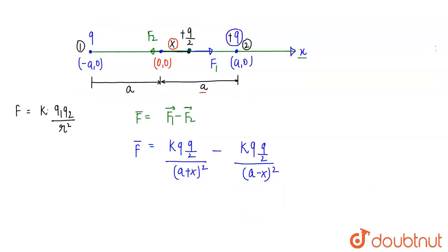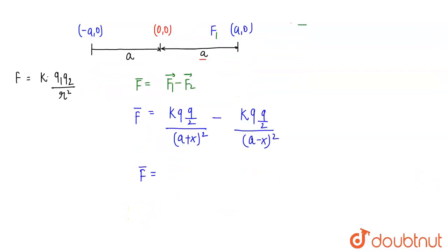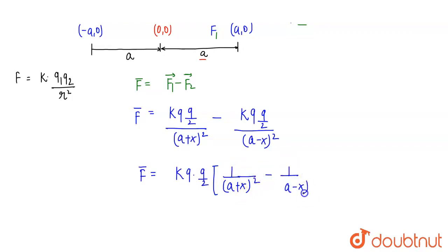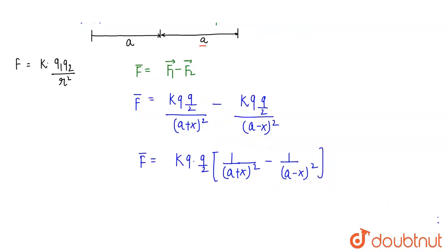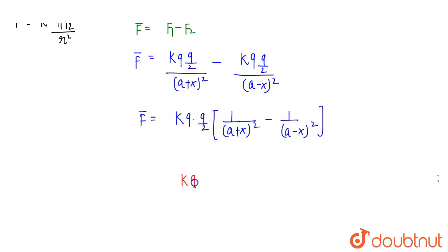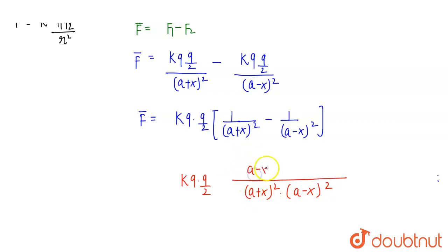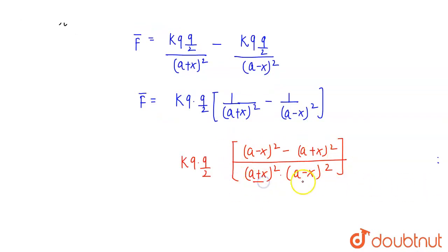Taking the LCM of (A+X)² and (A−X)², the net force becomes KQ(Q/2) times [(A−X)² − (A+X)²] divided by [(A+X)²(A−X)²]. Expanding the numerator using the identity (a−b)² − (a+b)² = −4ab, we get −4AX in the numerator.